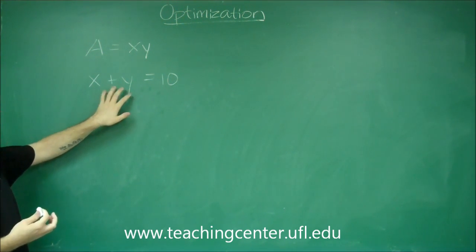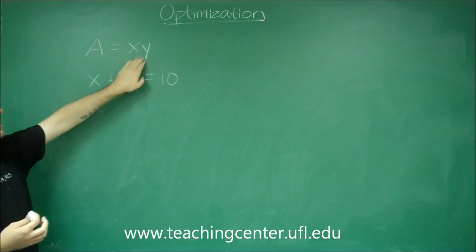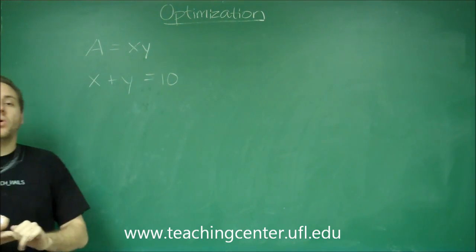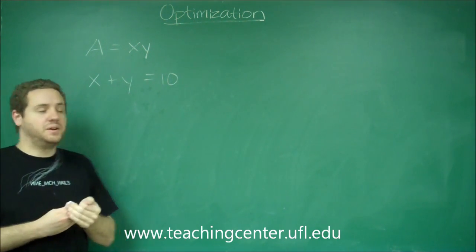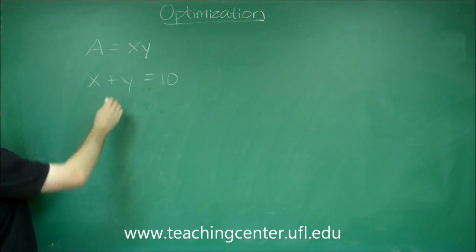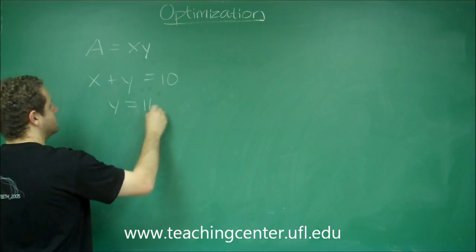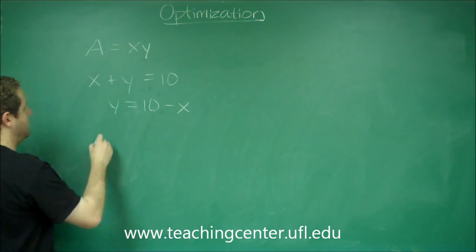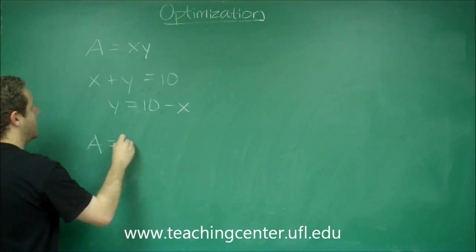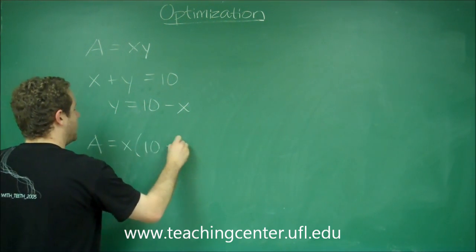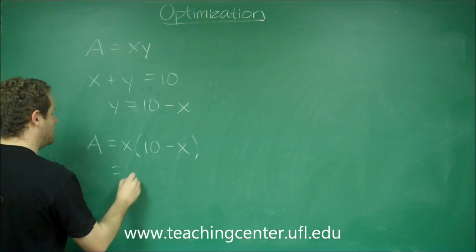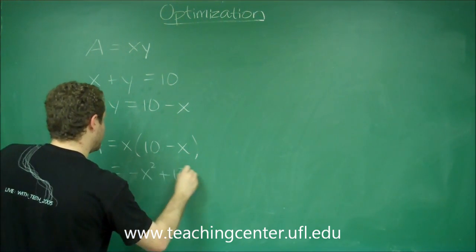I can solve for one of my variables, plug it in here, and I will only have one, which will make my derivative work out very nicely. If I solve for y and plug it in for this y, I get A = x(10 - x), which is -x² + 10x.